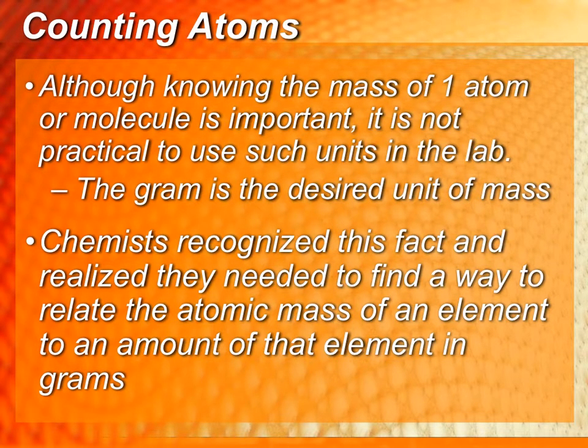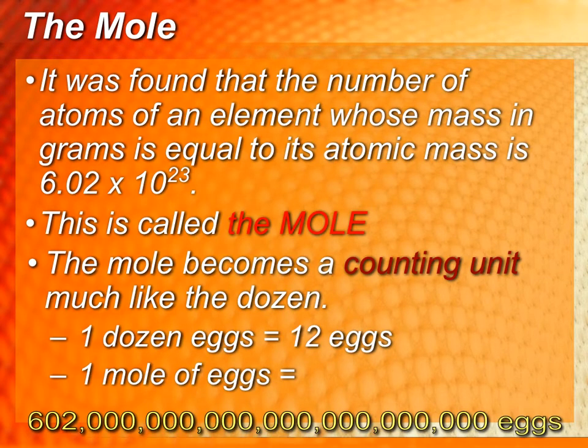So an AMU value is a lot smaller than the mass of a gram, which is what we can actually measure in a classroom. So our balances all measure things in grams, so it's not very practical for us to measure in terms of AMUs. So scientists came up with a way that we can count the number of atoms using the equipment that we have in our general science labs and classes. And what they came up with was this idea of a mole. It was found that the number of atoms of an element whose mass in grams is equal to the atomic mass contains 6.02 times 10 to the 23rd atoms. This number, or this amount of atoms, is called a mole.